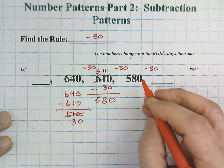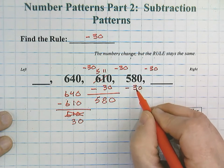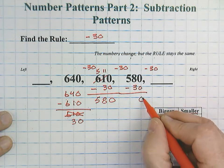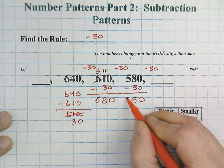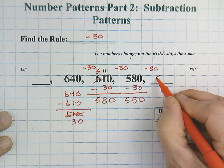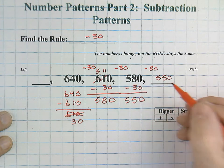So, let's take 580 minus 30. 0 take away 0 is 0. 8 minus 3 is 5. And 5 take away nothing in the hundreds would be 550 for this one.